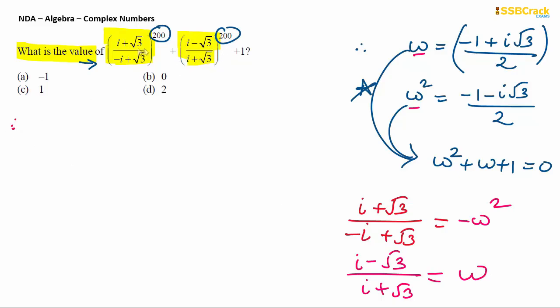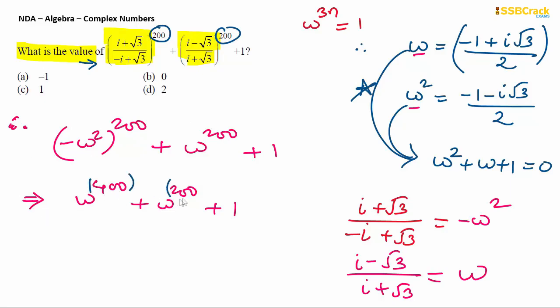So we are getting here, the question which looked complex now became simple. The question became minus omega square raise to 200 plus omega raise to 200 plus 1. This becomes omega raise to 400 plus omega raise to 200 plus 1.